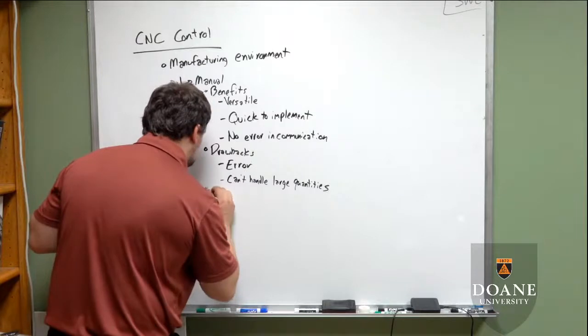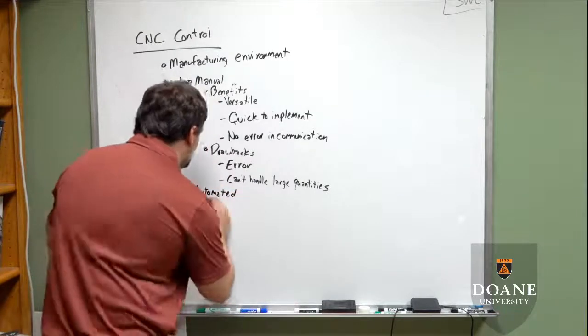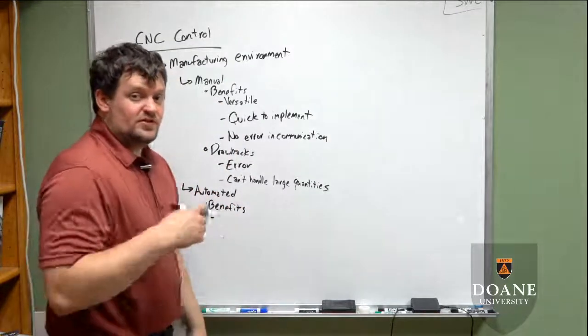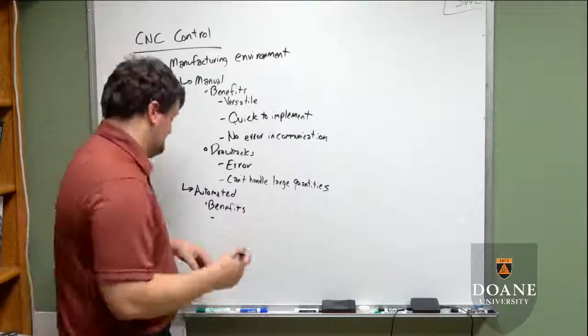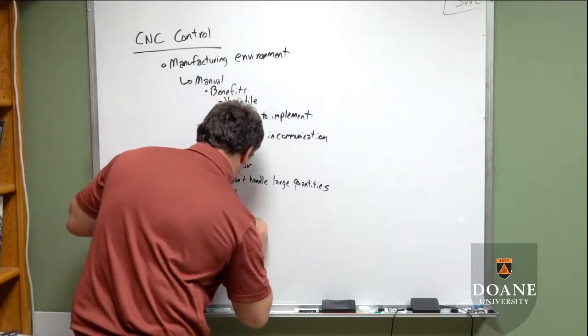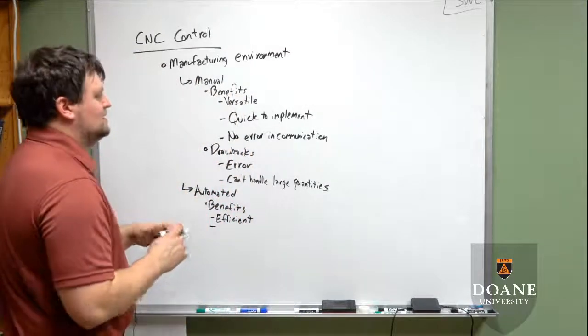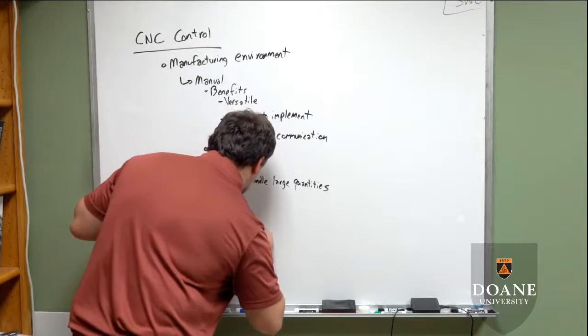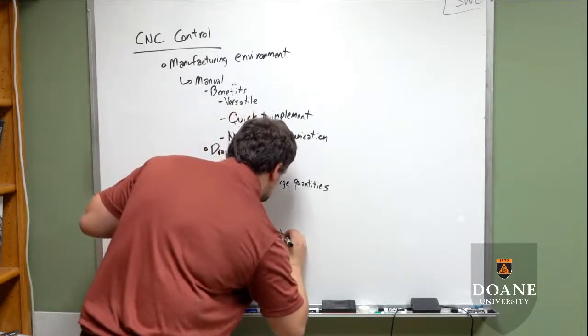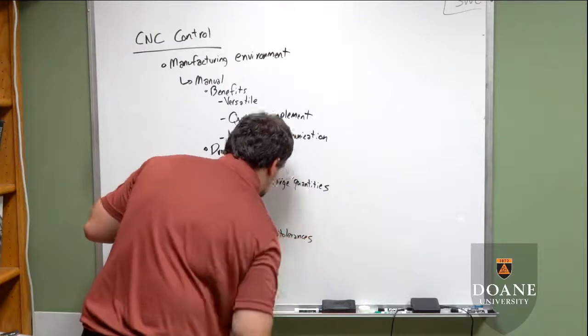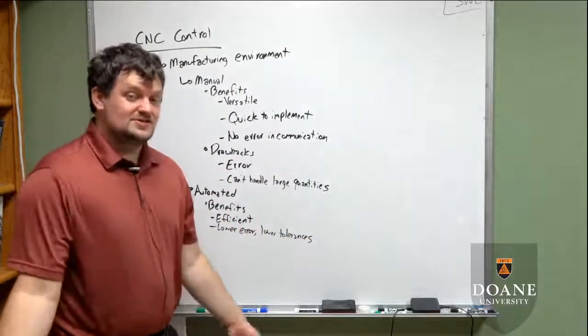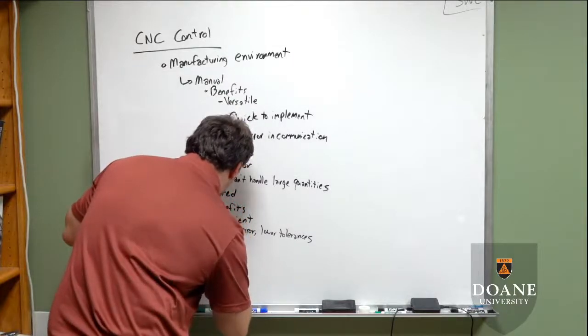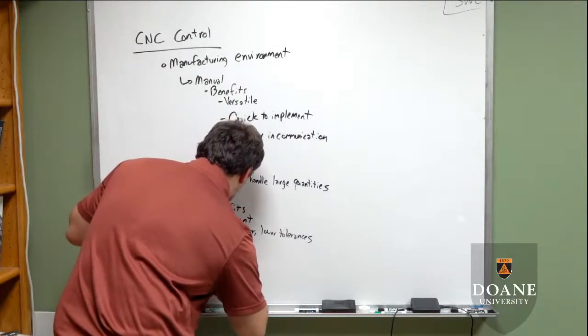So the other one is a more automated system. The benefits to an automated system are that an automated system is much more efficient. It does exactly the same thing every time. It has much lower error and also has lower tolerances. Human machining, our tolerancing is not as good as automated machining is yet. But there are a few drawbacks with an automated system as well.